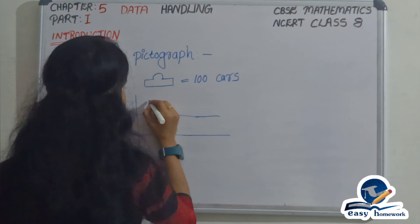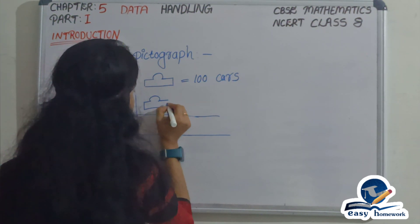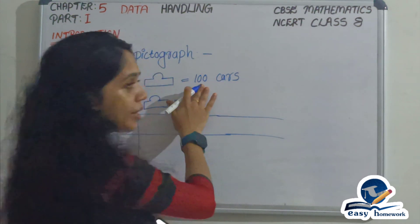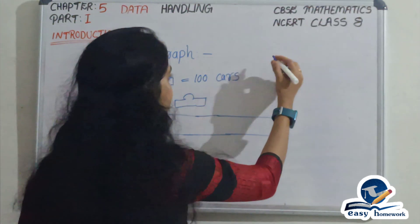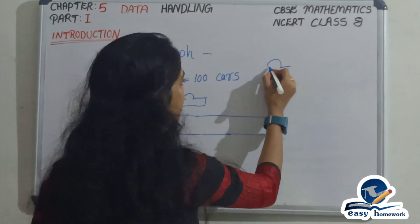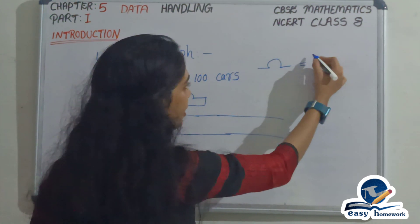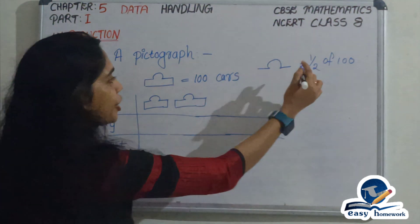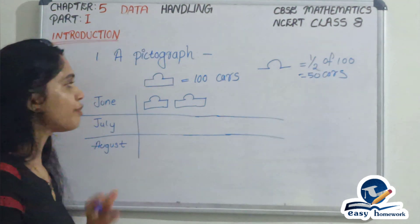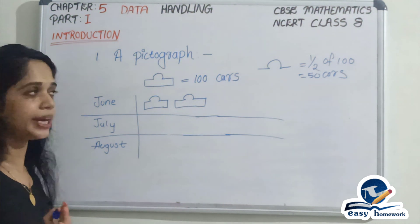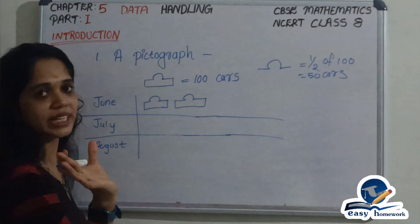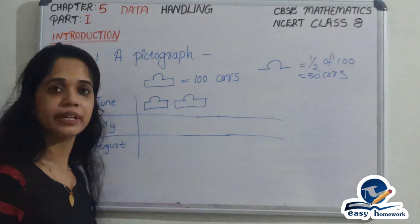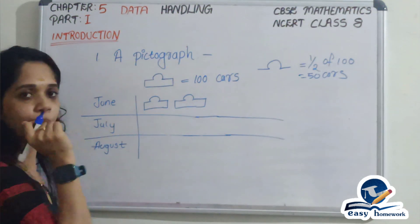In June, each symbol represents 100 cars. If a symbol is shown as half, that half picture represents half of 100, which is 50 cars. So a complete symbol is 100 cars and a half symbol is 50 cars.